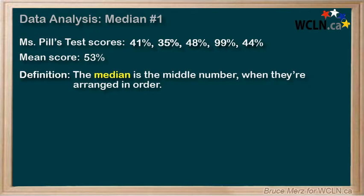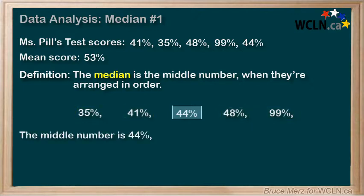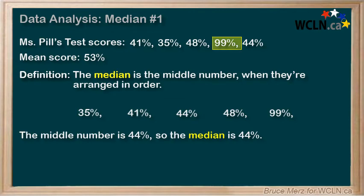For those math tests, if we arrange them all in order — and that part's important — we'd get this. Then we'd notice that the middle number, the one where there are just as many numbers in front as behind, is 44%. It has two numbers in front and two numbers after. So the median is 44%, and we would say the median test score is 44%.